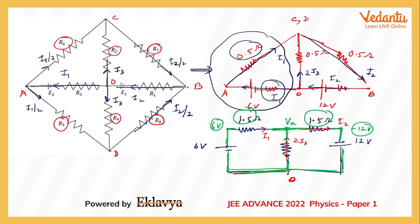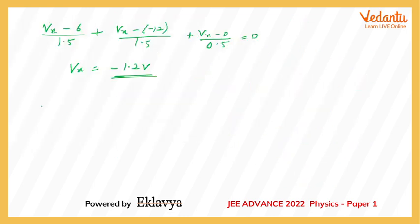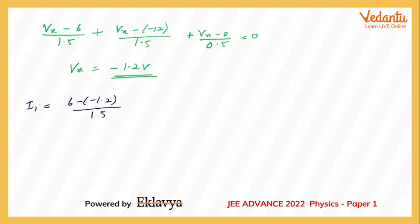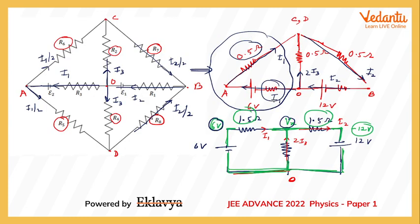Now that we have Vx = −1.2 V, we can calculate i1 directly: i1 = (6 − (−1.2)) / 1.5 = 7.2 / 1.5 = 4.8 amperes. So the branch carries 4.8 A, which means each parallel sub-branch carries 2.4 A.